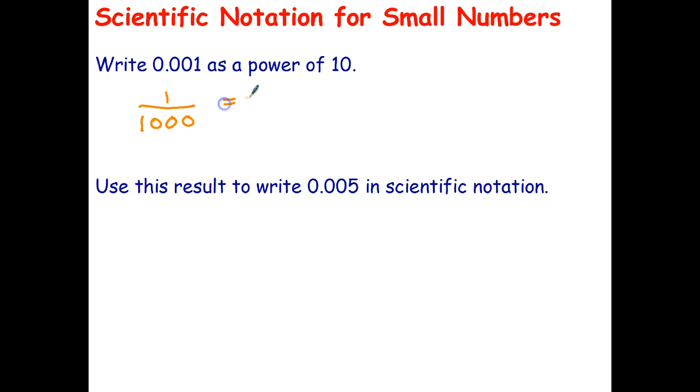A thousand can be written as 1 over 10 to the power of 3. From what you learned about your index laws, that can then be written as 10 to the negative 3, because negative indices just represent fractions. So 0.001 as a power of 10 is 10 to the negative 3.